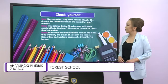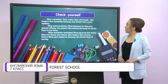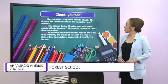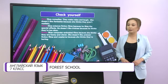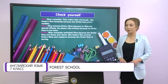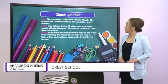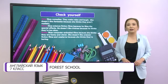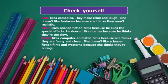Let's check. Jane likes comedies because they help her relax and laugh. She doesn't like fantasies because she thinks they aren't realistic. The second person is Steve. Steve likes science fiction films because he likes the special effects. He doesn't like dramas because he thinks they are too slow. And the third person is Susan. Susan likes computer-animated films because she thinks they are funny and clever. She doesn't like science fiction films and westerns because she thinks they are boring.